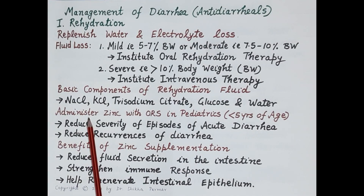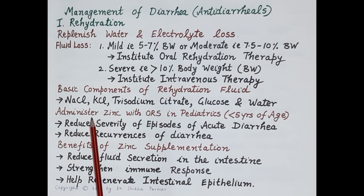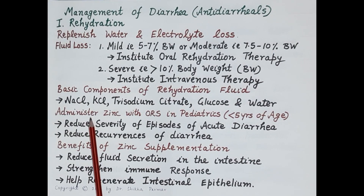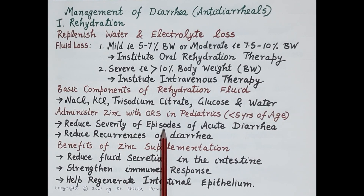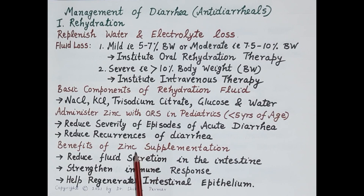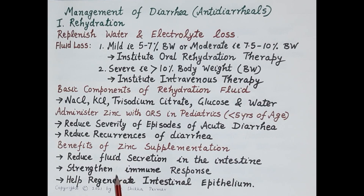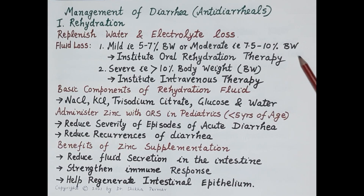WHO recommends that all children less than 5 years of age with acute diarrhea should be given ORS along with zinc supplementation for 10 to 14 days. Zinc supplementation along with ORS reduces the duration of acute diarrhea and also reduces recurrence for the next 2 to 3 months. Zinc inhibits chloride secretion, thereby reducing fluid secretion in the intestine. It may also strengthen immune response and help regeneration of intestinal epithelium.